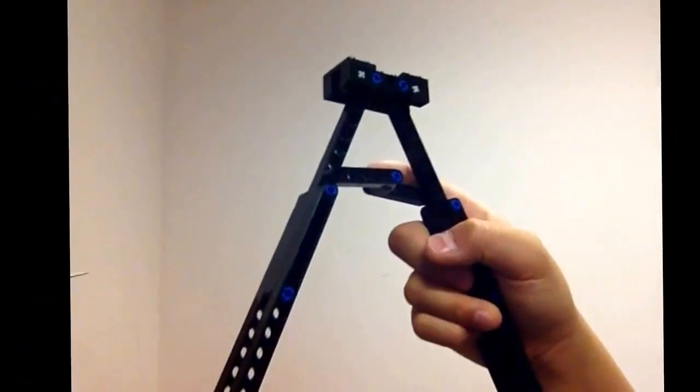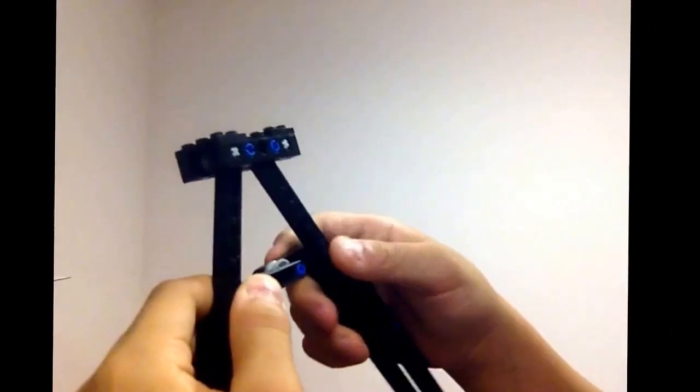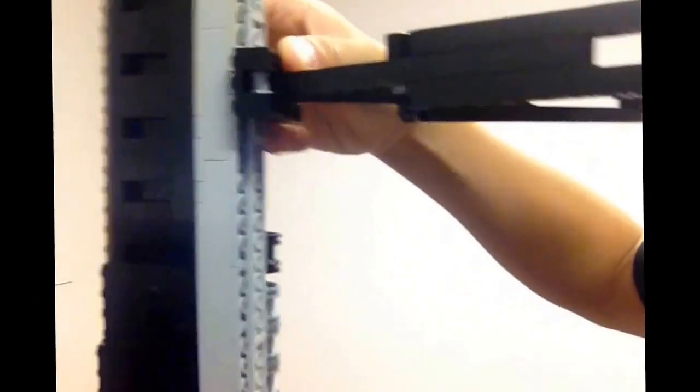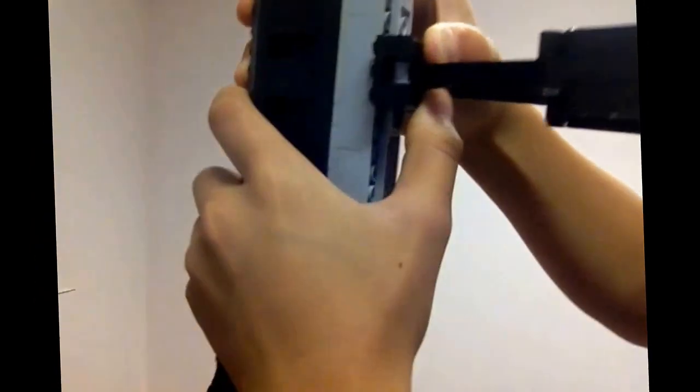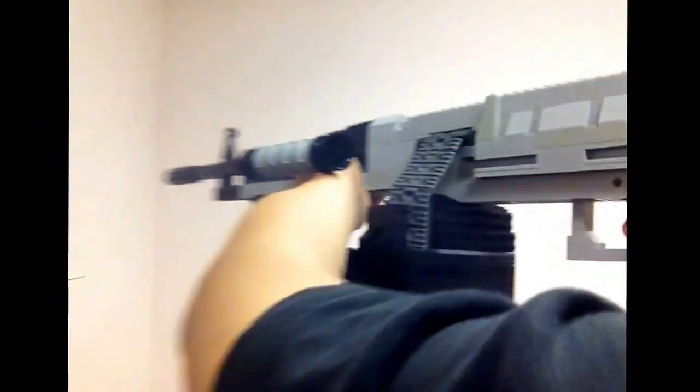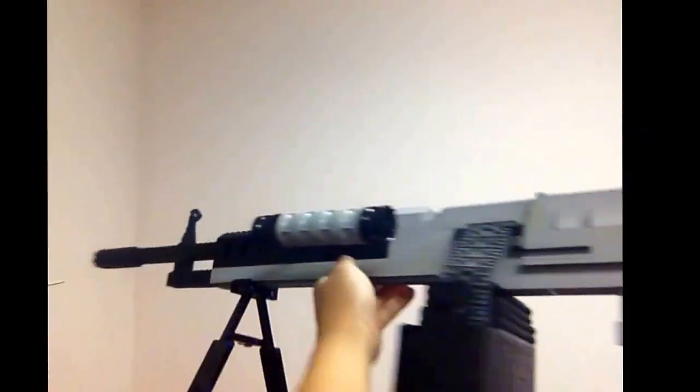And if you guys want instructions be sure to leave a like and comment that you want the instructions for this. And this thing just attaches to the bottom of the LSAT right underneath the barrel, it doesn't really obstruct the area for you to hold. So yeah, here it is, it's pretty nice looking and honestly I guess you can use this as a foregrip but it's kind of hard to use. But that's basically it.